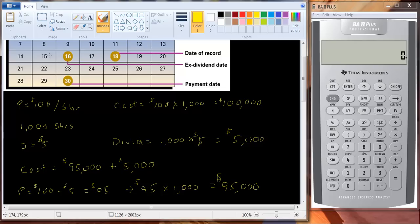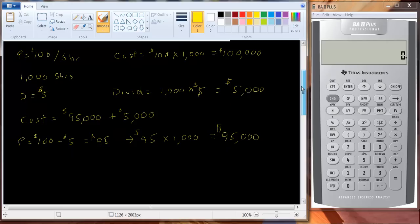They actually call that cum-dividend, C-U-M-dividend, it means with dividend. What's going to happen here? You're going to pay $100 a share. So your cost is going to be equal to $100 a share, times the 1,000 shares, so that's $100,000. What dividend do you receive? Well, we get a dividend that's equal to $5 a share, times 1,000 shares, so we get $5,000 in dividends.